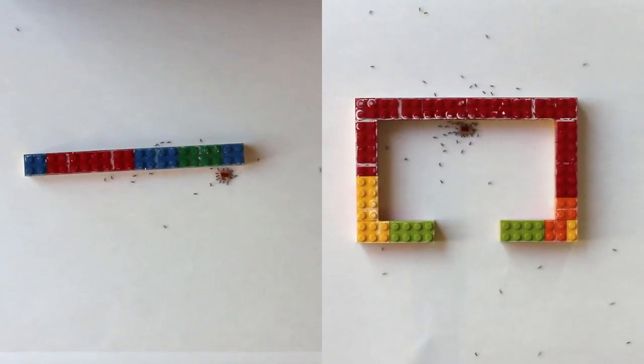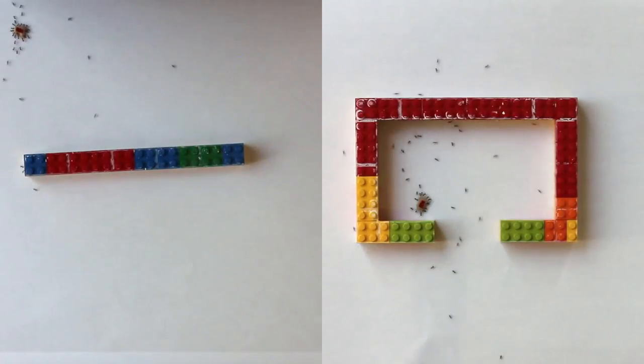So what happened? These ants navigated the wall very quickly. They took longer with the cul-de-sac, but they still always succeeded.